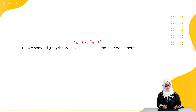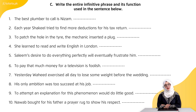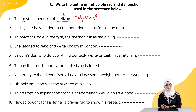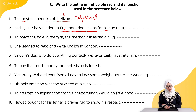Let's move on to the last question: write the entire infinitive phrase and identify its function in the sentence. First: 'The best plumber to call is Nizam.' 'To call is Nizam' — yeh hamare paas infinitive phrase hai, and 'best plumber' ki quality bata raha hai — so this is an adjectival infinitive. Second: 'Each year, Shaquil tried to find more deductions for his tax return.' 'To find more deductions' — yeh infinitive phrase hai. 'Tried' ek verb hai, aur us ke baare mein additional information de raha hai — so this will be adverbial.